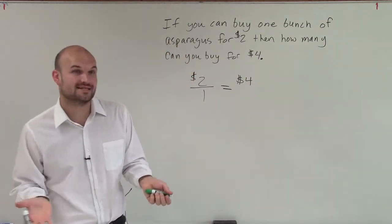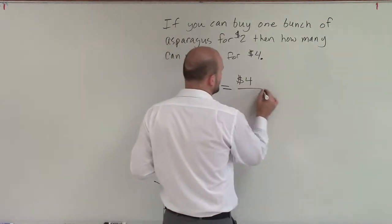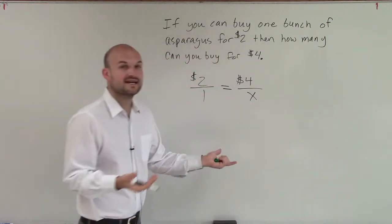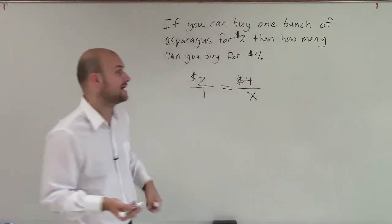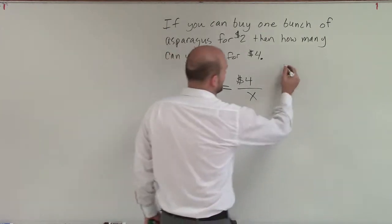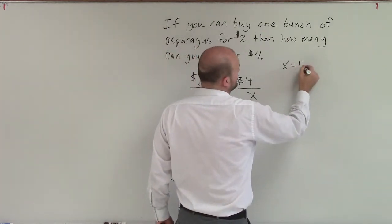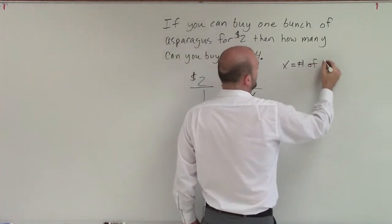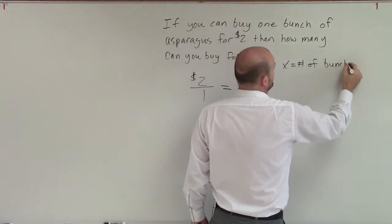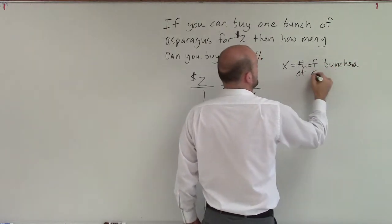Now remember, we represent our unknowns with variables. So in this case, I'll represent x. And since I'm including x, I'm going to write in what x represents. So x equals the number of bunches of asparagus.